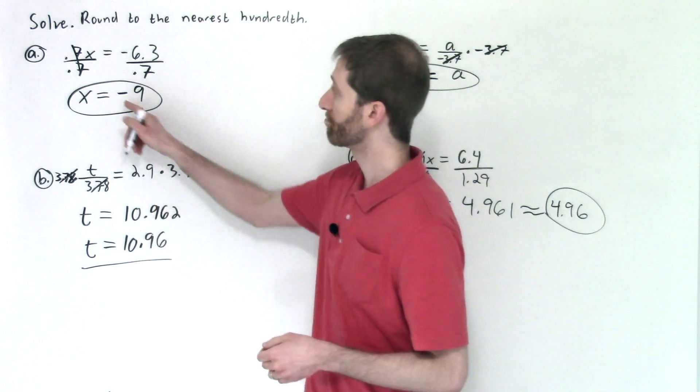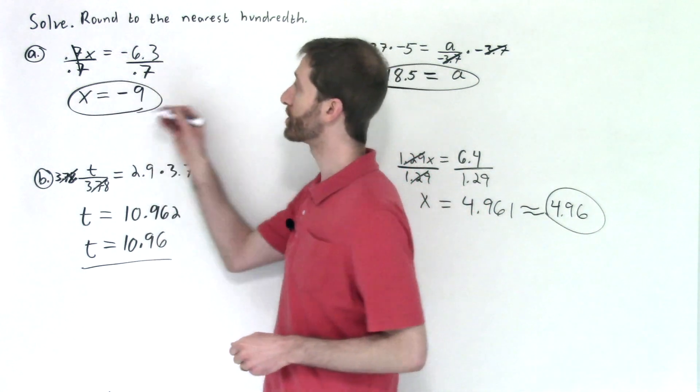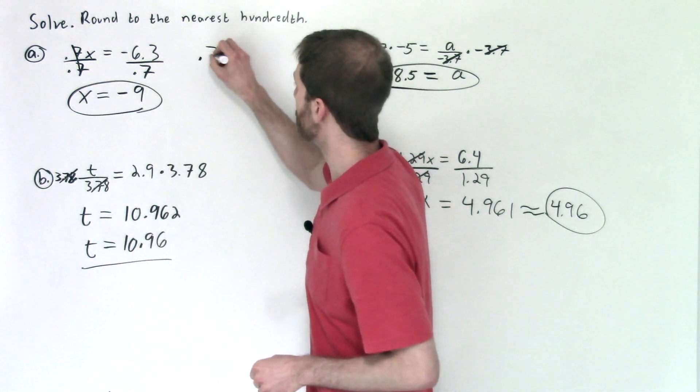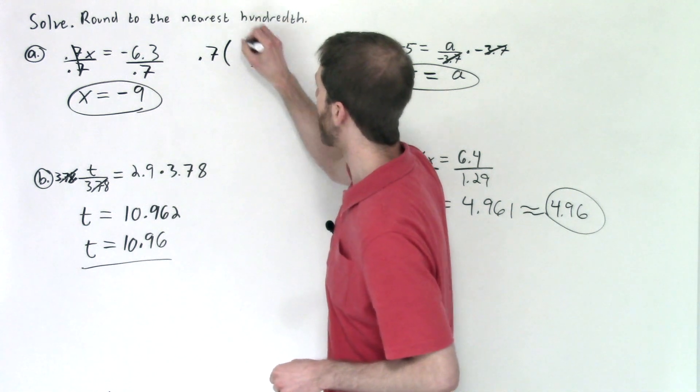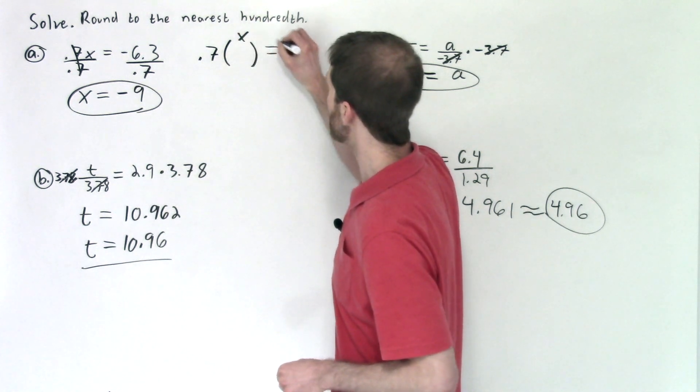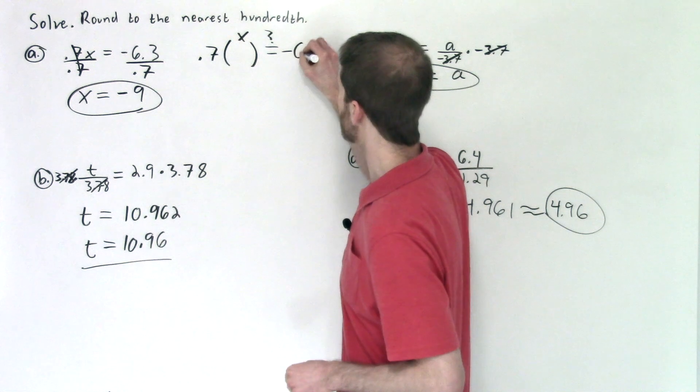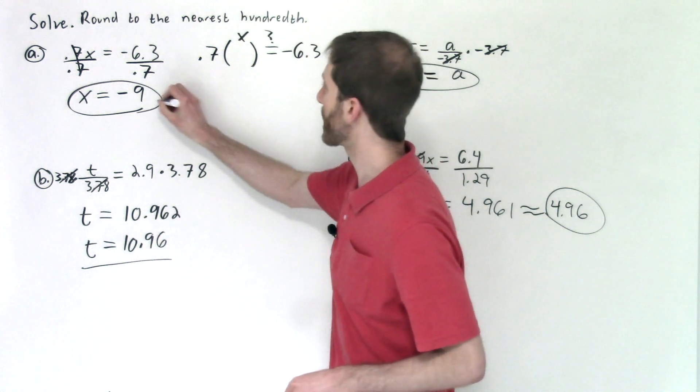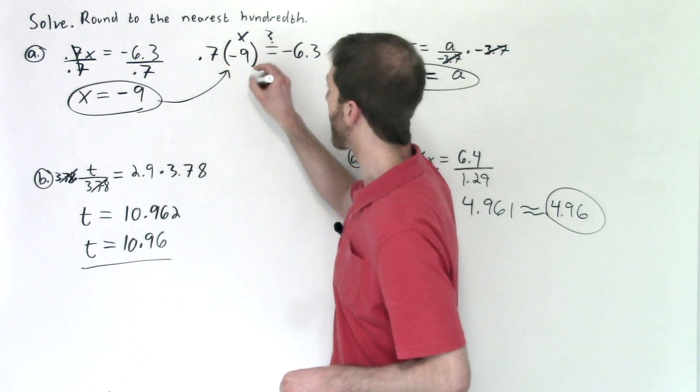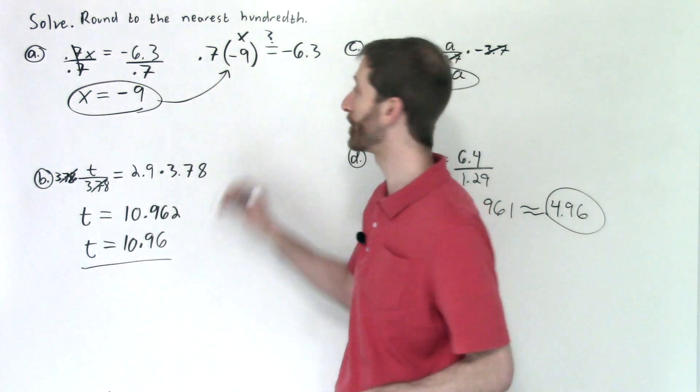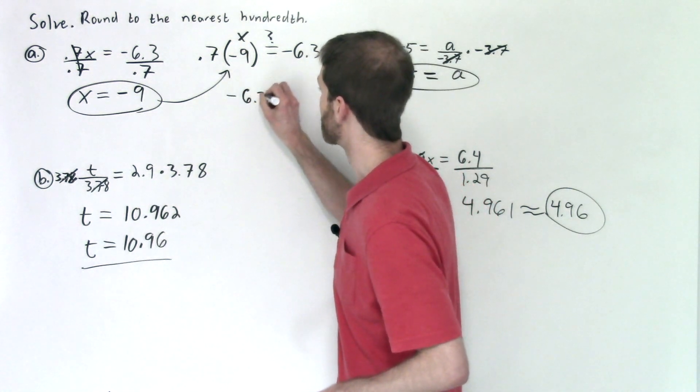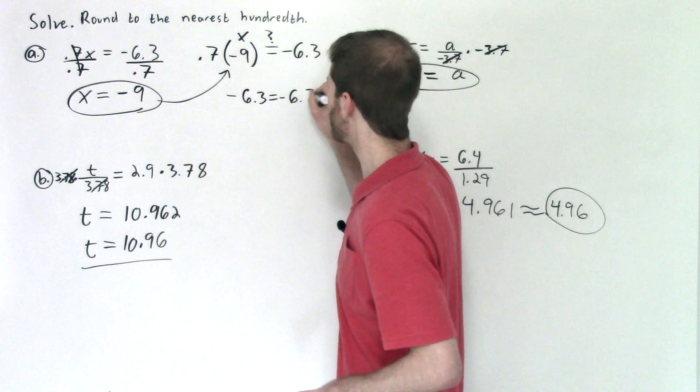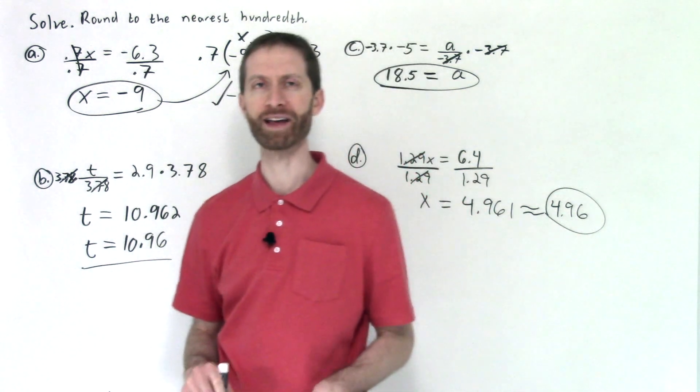We could take this one, letter A. We plug negative 9 into the original equation. So that was 0.7 times an unknown amount x. Is it equal to negative 6.3? So you take negative 9 and plug it in. And negative 9 times 0.7, guess what it is, folks? Negative 6.3. So even the check is the same as what we've done in the past.